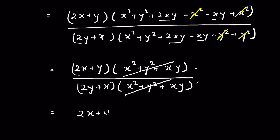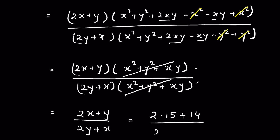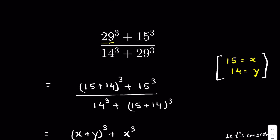Now substituting x = 15 and y = 14: the numerator is 2(15) + 14 = 30 + 14 = 44, and the denominator is 2(14) + 15 = 28 + 15 = 43. So the answer is 44/43.